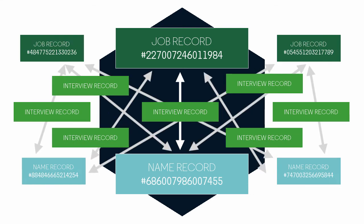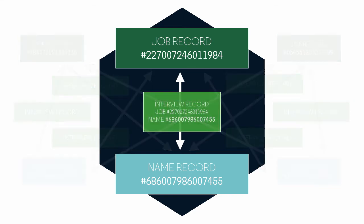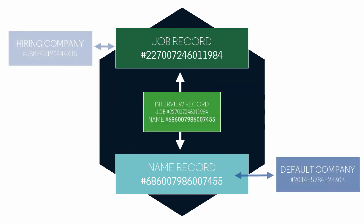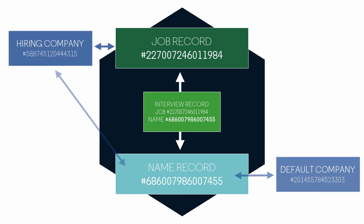Instead, they include the global identifiers indicating which job and which names those pipeline records are pertinent to. This setup lets you have multiple candidates tied to multiple jobs, regardless of what company the job or candidate are associated with. In fact, most of the time your candidates will belong to the default company, which is a special company record that PCR uses to group all the names that don't belong to any more specific company — a talent pool. When you place someone, PCR changes their company identifier to the one from the job they were just placed in, effectively making them a name under that company, but without losing or changing any of the history they came with.